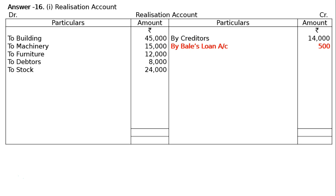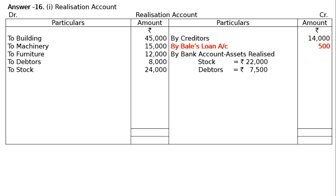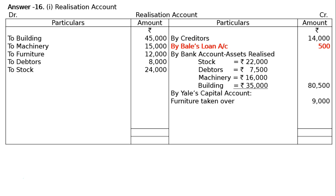The next entry is By Bank Account for assets realized: Stock Rs. 22,000, Debtors Rs. 7,500, Machinery Rs. 16,000, and Building Rs. 35,000 — totaling Rs. 80,500. Then, By Bale's Capital Account for furniture taken over. Adjustment B: Bale took over the furniture at Rs. 9,000, so By Bale's Capital Account — furniture taken over Rs. 9,000.